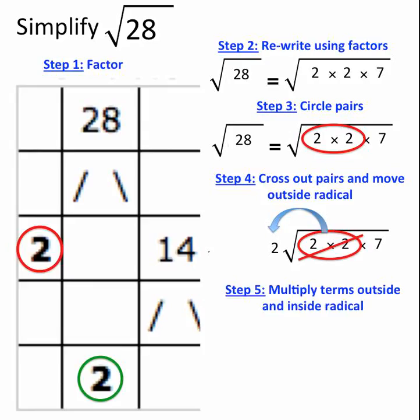My final step is to multiply the terms both outside and inside the radical. But when I look at this expression, I don't have to do either of those things.